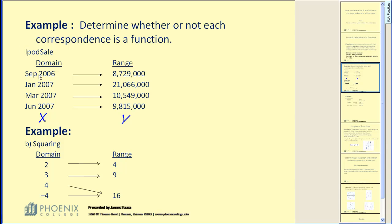September 6th is only paired with one number of sales. January 7th is only paired with one number of sales. And so on. Every x only has one y. Yes, this is a function.